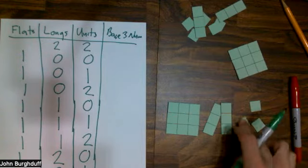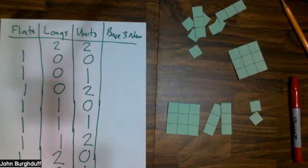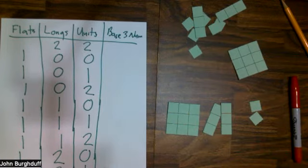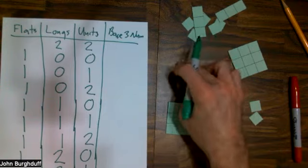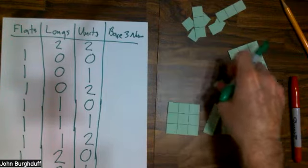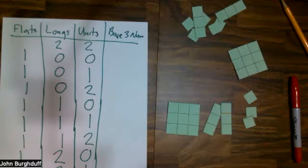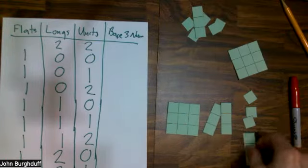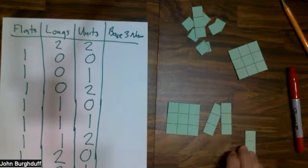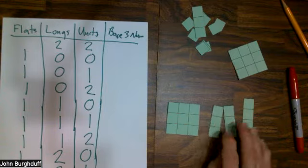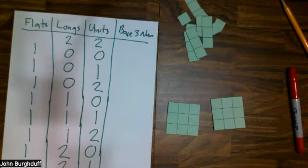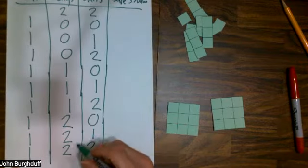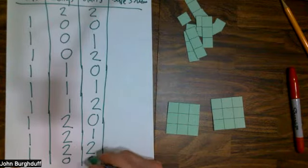Bring in another one. One flat, two longs, two units. And if I bring in one more unit, I'd say, okay, those three units need to be replaced by a long. But those three longs need to be replaced by a flat. So the next number, I'll squeeze this in right down here. Two flats, no longs, no units.